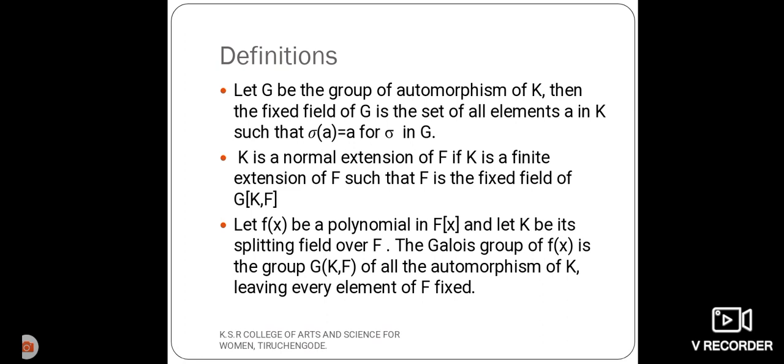Next, let f(x) be the polynomial in capital F of x, and let K be its splitting field over F. Then, the Galois group of f(x) is the group G(K,F) of all automorphisms of K, leaving every element of F fixed.